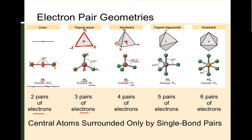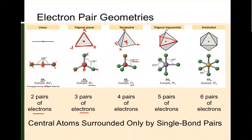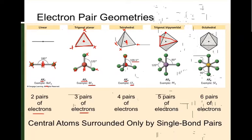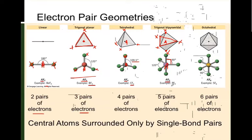Trigonal bipyramidal is a combination of a trigonal planar structure with an atom above and below the plane. The central atom A is in the middle, with bonded atoms X on each corner of the triangle and also above and below the plane. There are two bond angles: 120-degree angles from the trigonal planar part, and 90-degree angles from the atoms above and below the plane. Its formula is AX5, and an example is PF5.